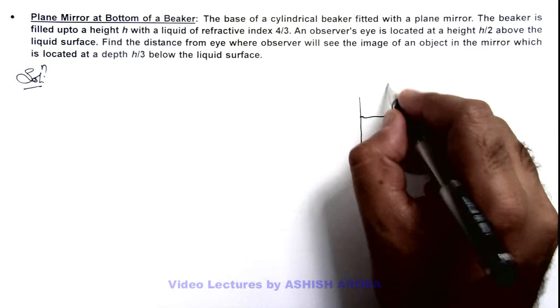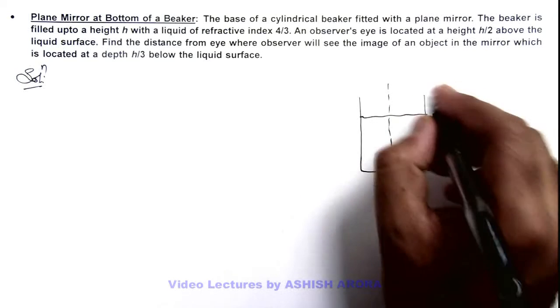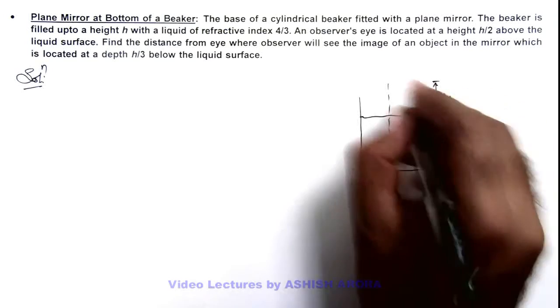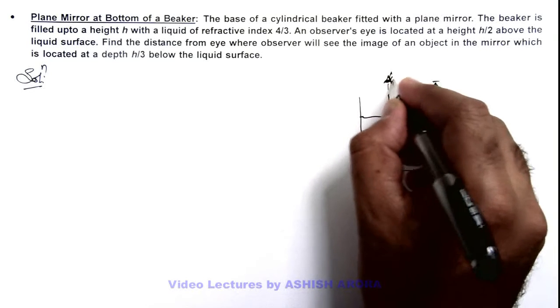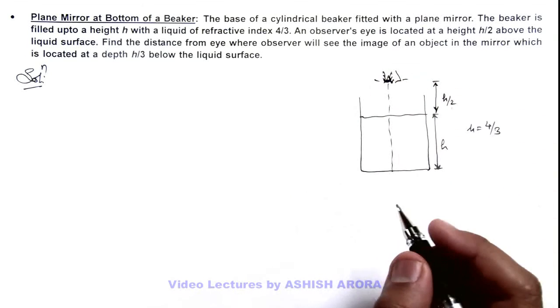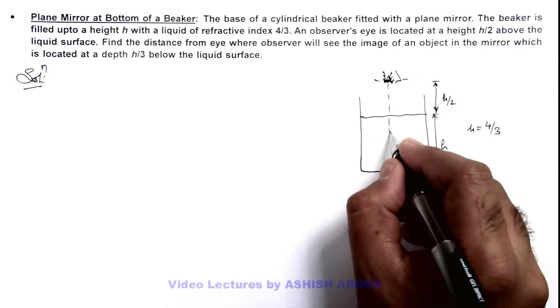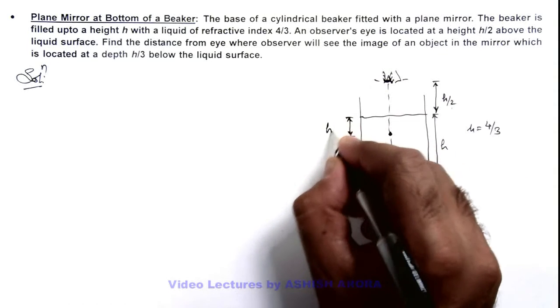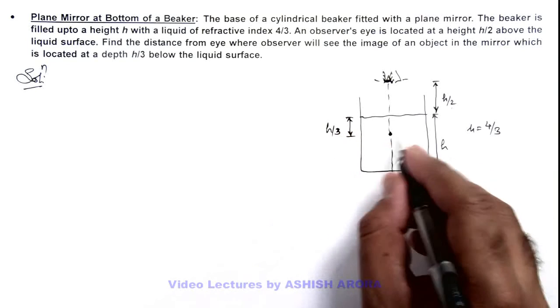Above this liquid surface, at a height h/2, there is an observer's eye located from where he is looking into this beaker. And an object is placed at a depth h/3 below the liquid surface, as we can see this is the object.